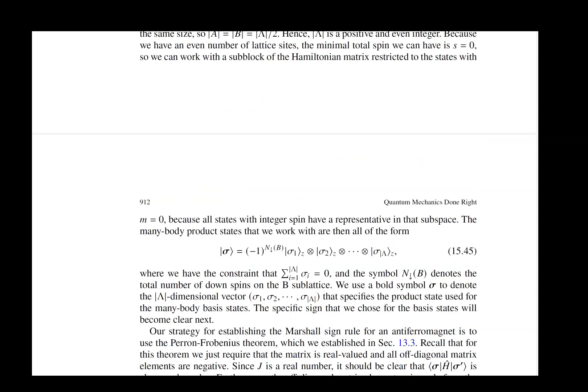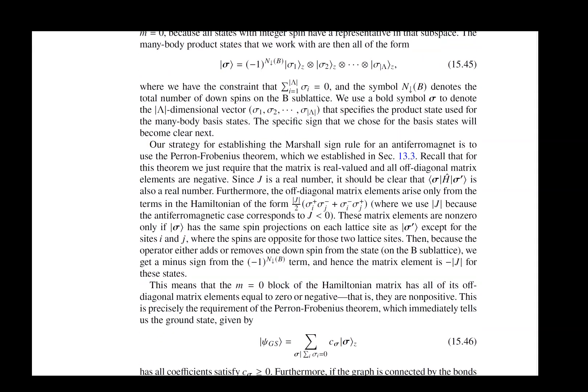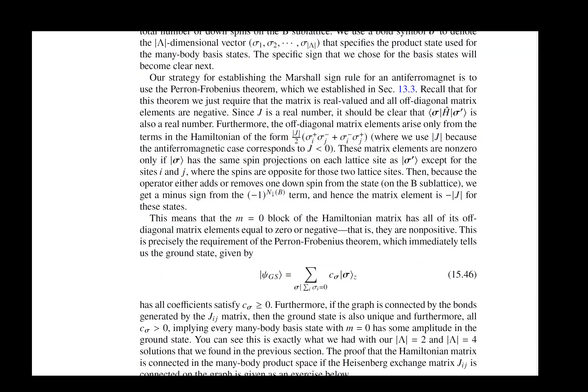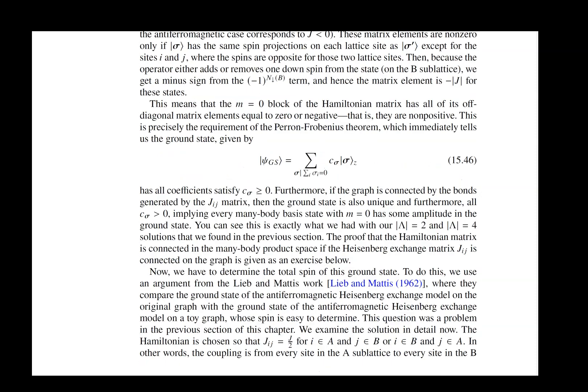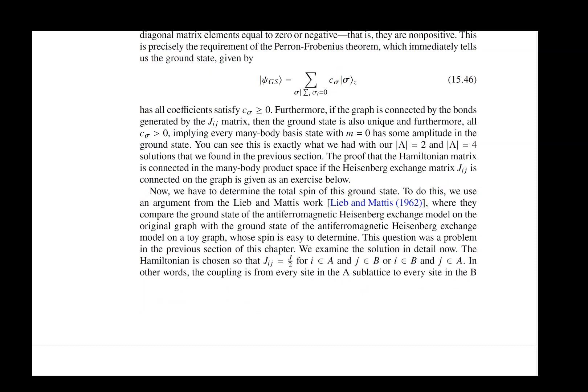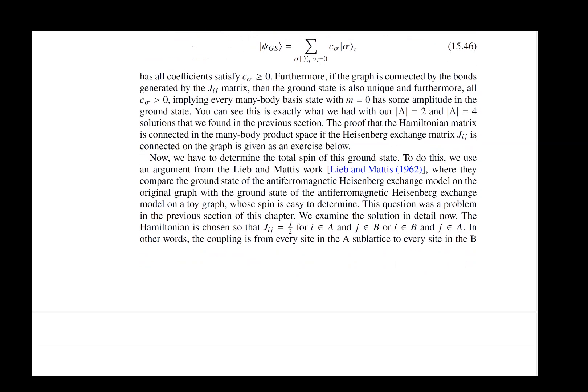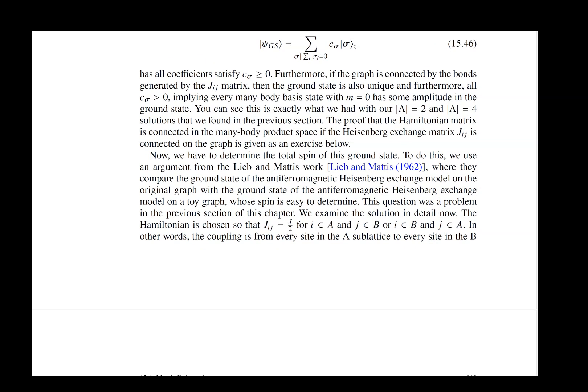And what it tells us is that the ground state has to satisfy a certain property. This property comes from that Perron-Frobenius theorem that we covered in chapter 13. And this is the first place in which we use that theorem. We'll use it again when we study the Hubbard model. And then because of that Perron-Frobenius theorem, it turns out that the coefficients of the quantum state have to all be positive in the expansion. And none of them can equal zero.